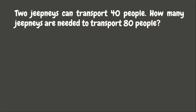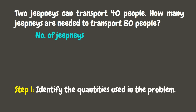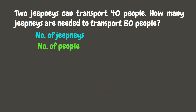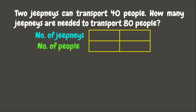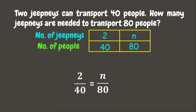In solving a direct proportion problem, the first step is to identify the quantities used in the problem. Here we have the number of jeepneys and the number of people. Now let's make a table. It is given that for every two jeepneys we can transport 40 people, and for 80 people we are still looking for it — that's why let's put the first letter n. Now for the second step, let's set up a proportion: 2 over 40 equals n over 80.